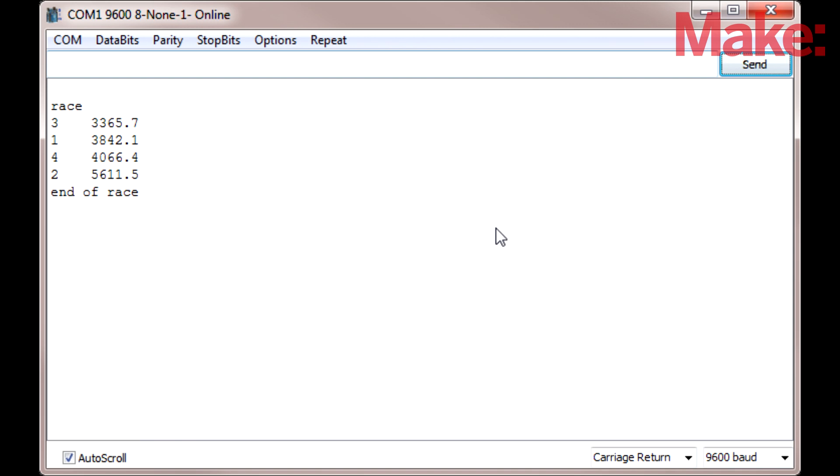Then once the cars cross the finish line, the order in which they did so is listed - in this case, 3-1-4-2. The number to the right indicates how many seconds it took from the start of the race to the finish for that car, and this is in milliseconds. And at the end, there's 'end of race.'